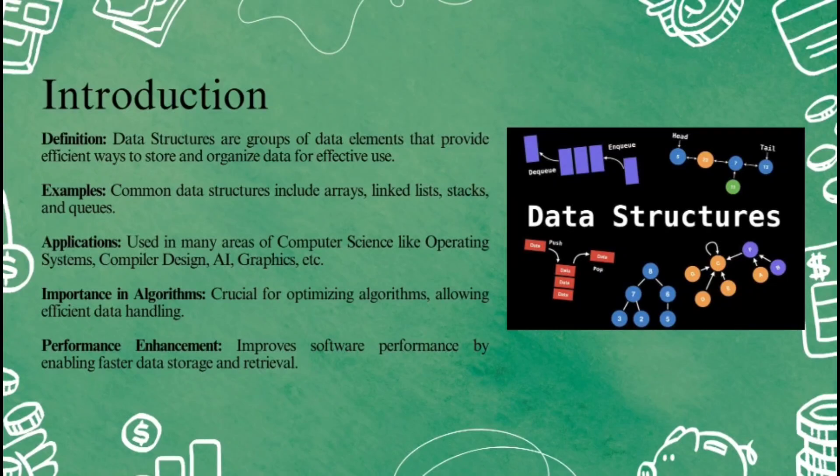Stack: imagine a stack of plates. You can only take the top plate off or add a new one on top. This is called last in, first out — or LIFO. Queue: this is like standing in line for something. The first person in line gets served first, and this is called first in, first out — or FIFO.